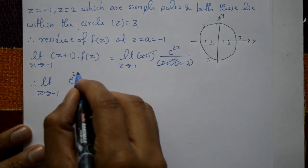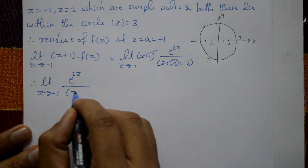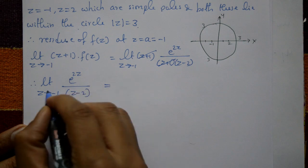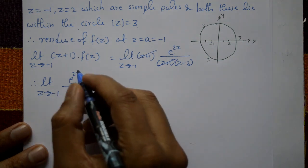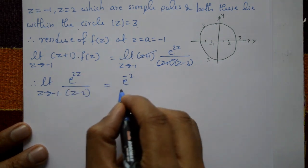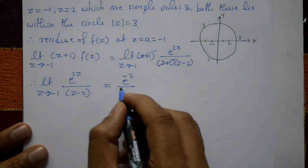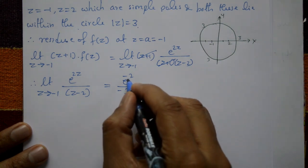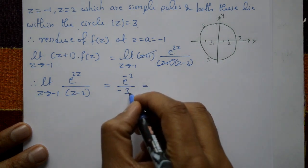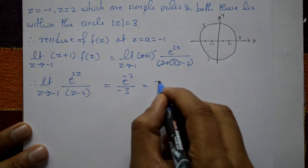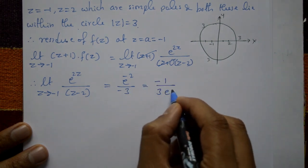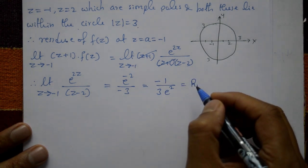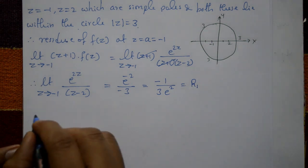After cancellation, the limit as z tends to -1 of e^(2z) / (z - 2) is evaluated by substituting z = -1, giving e^(-2) / (-1 - 2) = e^(-2) / (-3) = -1/3 · e². This is the first residue, R₁.